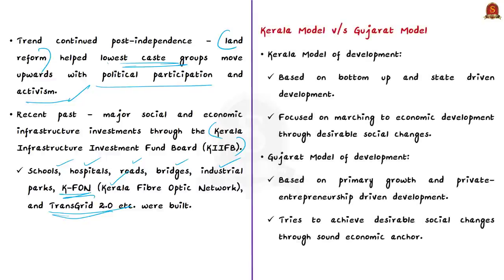Now we often hear Kerala model in comparison with the Gujarat model of development. Gujarat experienced a quantum jump in its growth rate in the period from 2002-03 to 2011-12. From an exam perspective, let us have a brief comparison between the Kerala model and the Gujarat model. The Kerala model is based on a bottom-up approach and state-driven development, whereas the Gujarat model encapsulates primary growth and private entrepreneurship-driven development.